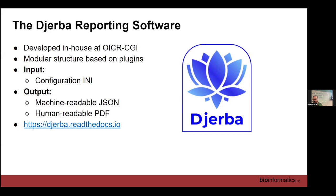When it comes to running Jirba, we provide it with a configuration file to generate a report. The config file is in INI format, which is a fairly standard plain text config format. Jirba produces a machine-readable JSON file — which could be automatically read in by software, queried, and summarized — and the other output, the one clinicians actually see, is a human-readable PDF. Jirba has documentation on Read the Docs and the software is open source and available on GitHub.